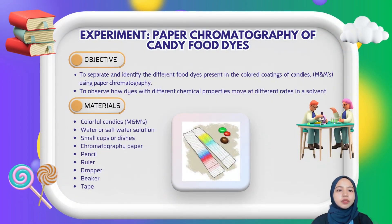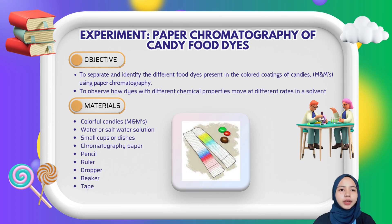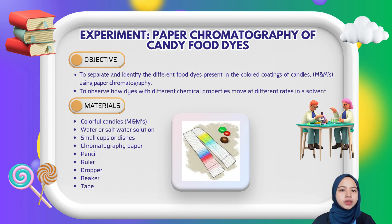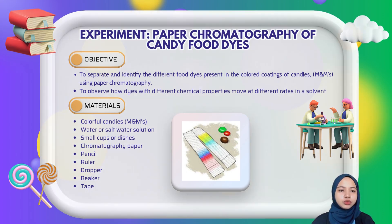Now let's look at the paper chromatography experiment using candy food dyes. The objective is to separate and identify the different food dyes present in the color coatings of M&M candy using paper chromatography, and to observe how dyes with different chemical properties move at different rates in the solvent. Here are the materials we need to use.